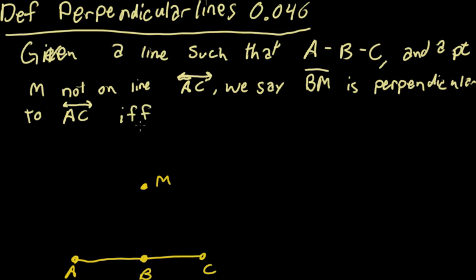If and only if the angles, the angle ABM, we'll say measure of angle ABM. Actually, let's not go with angle measure. Let's go with congruence. That's a little bit more specific. So ABM, they mean the same thing, is congruent to angle CBM.